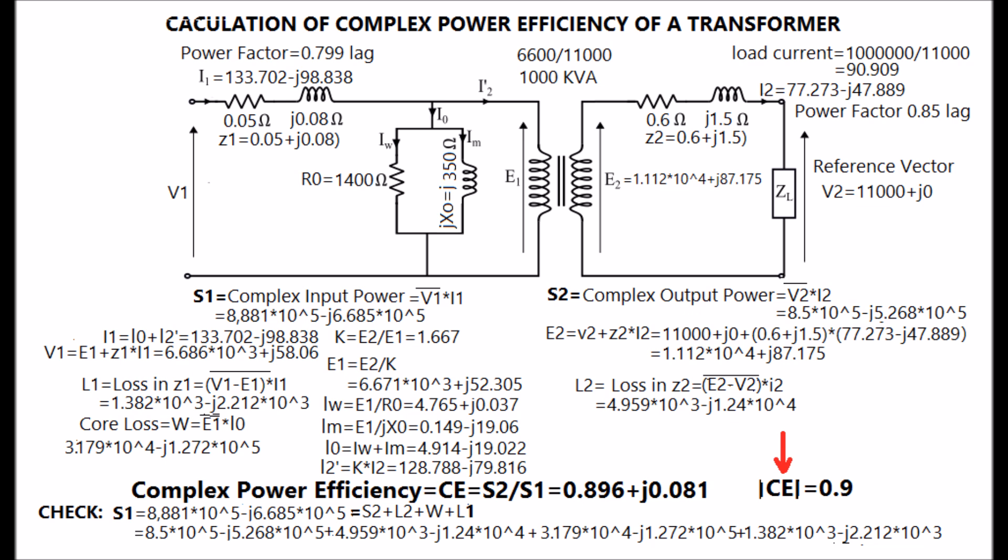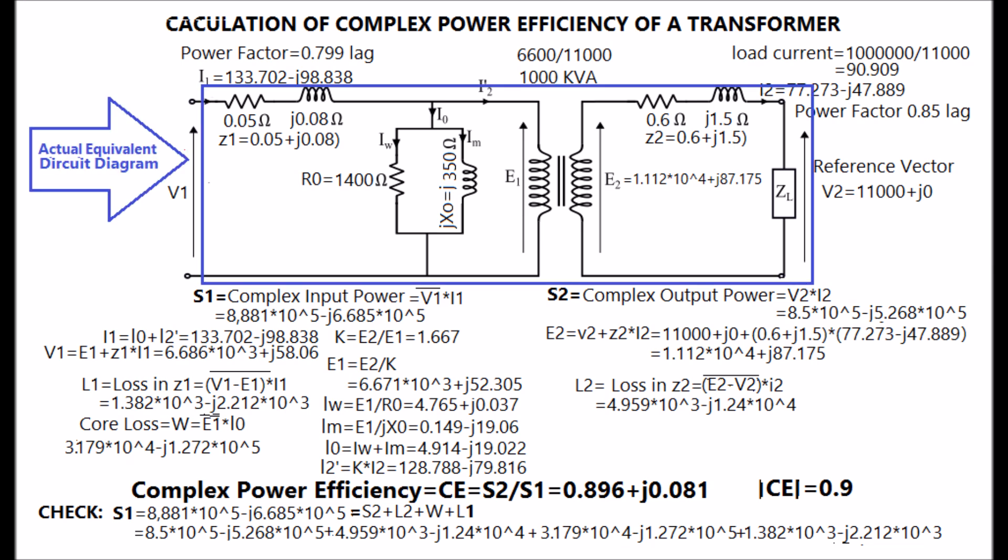The magnitude is 0.9. The complex power check S2 plus L2 plus W plus L1 equal to S1 is also verified as shown in the display. The actual equivalent circuit diagram of transformer is considered in these calculations.